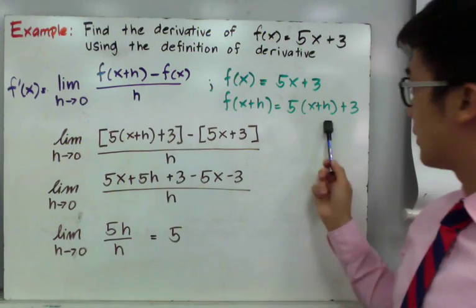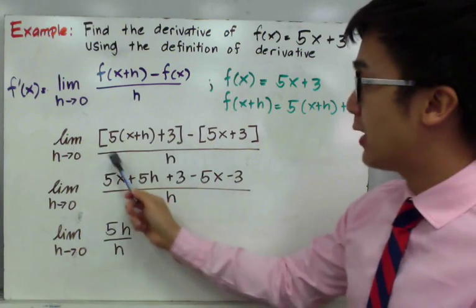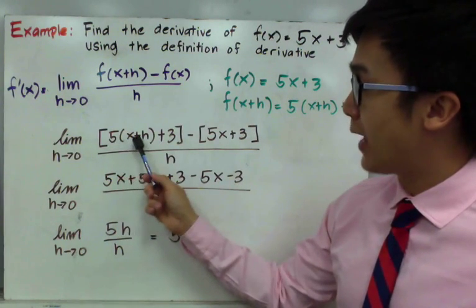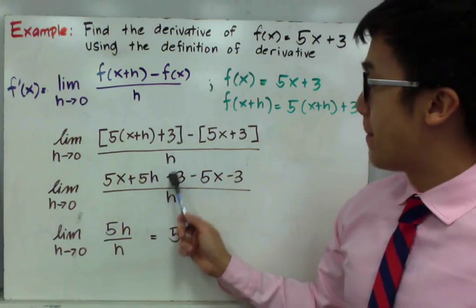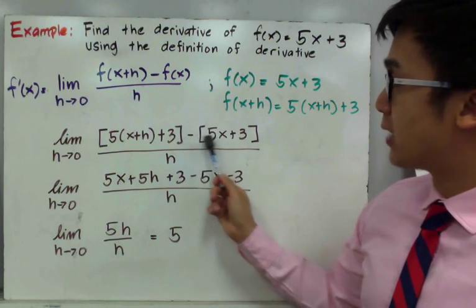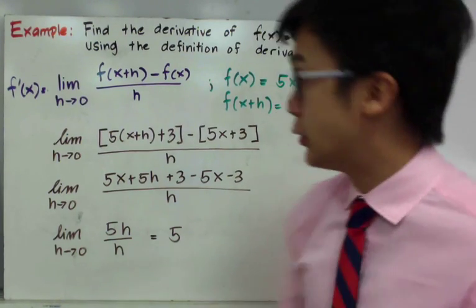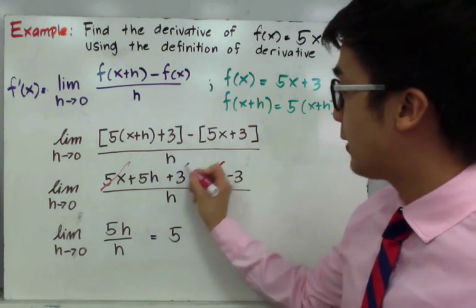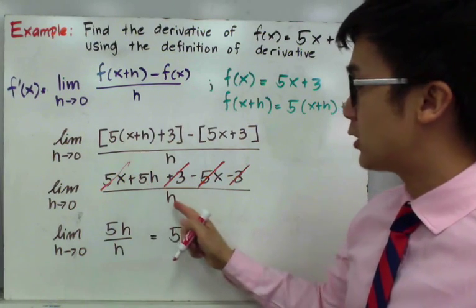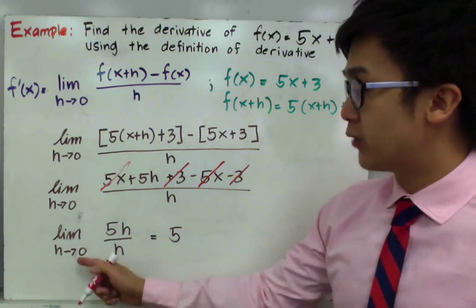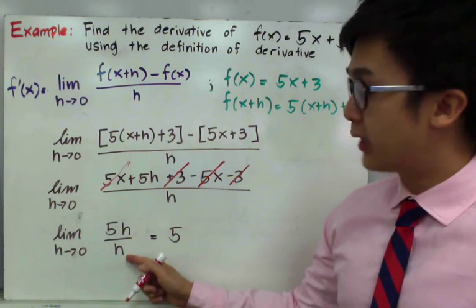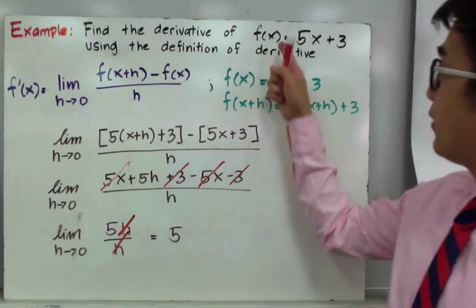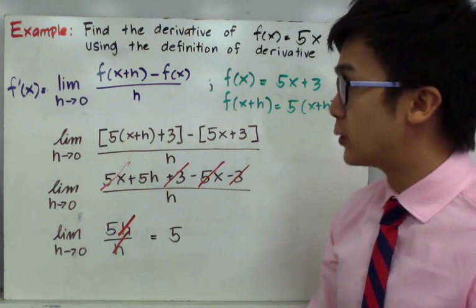The limit of f of x plus h minus f of x, all over h, is now set up. We simplify the numerator by distributing 5 to x plus h, giving us 5x plus 5h plus 3, minus 5x minus 3, after distributing the negative sign. We cancel 5x and negative 5x, and 3 and negative 3, leaving 5h over h. Canceling h gives us 5. Therefore, the derivative of f of x equals 5x plus 3 is simply 5.